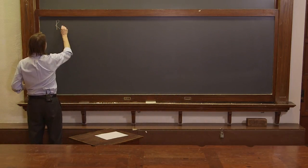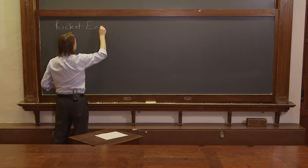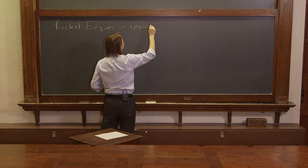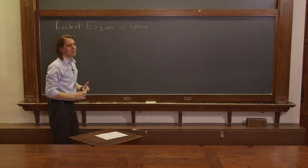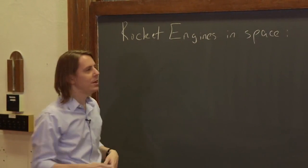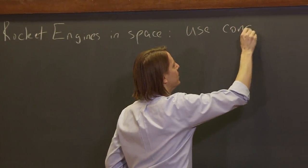Rocket engines. So now, say we want to go into space. They can't really do this. There's no friction. There's nothing to push against in space. So if we want to move in space, what you've got to do is use the conservation of momentum.